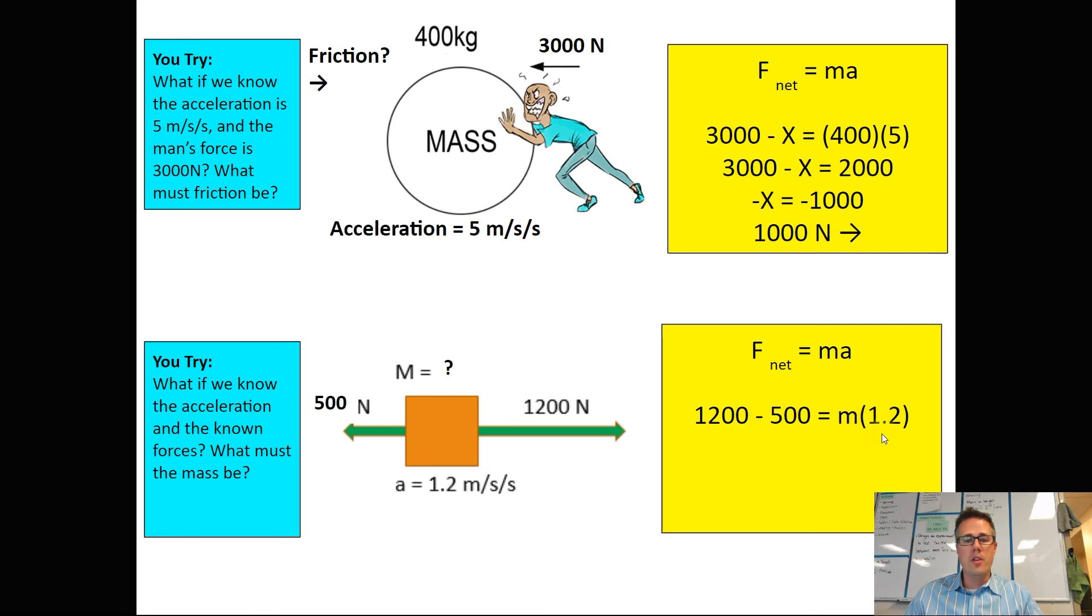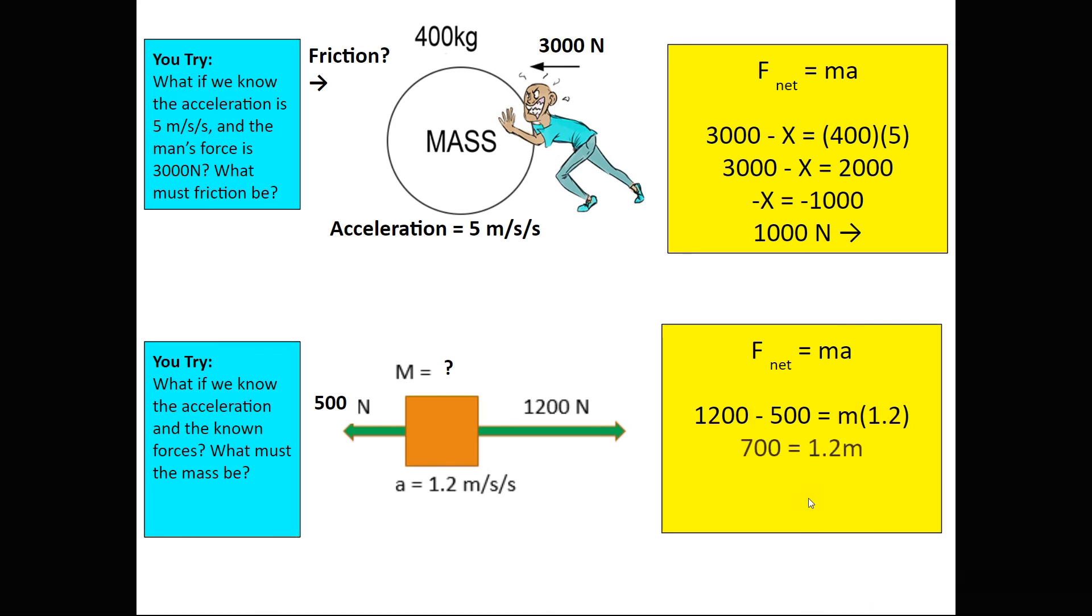When we clean that up, we'll get 700 equals 1.2m. Divide both sides by 1.2, and we get our mass of 583.33 kilograms. Please notice that mass is the only part of this equation that's not going to have a direction.